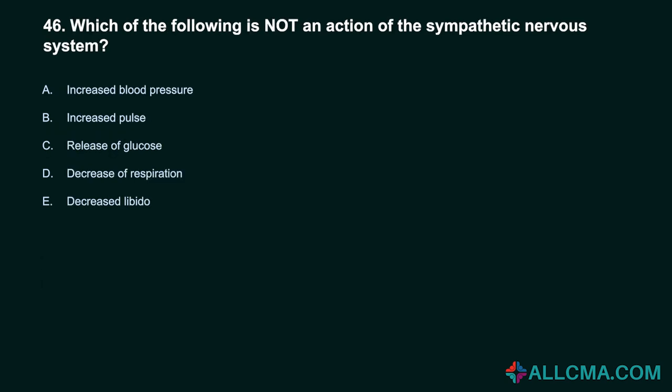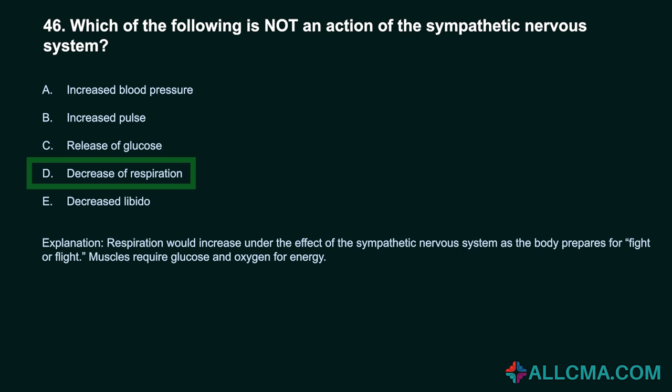Question 46: Which of the following is not an action of the sympathetic nervous system? A. Increased blood pressure. B. Increased pulse. C. Release of glucose. D. Decrease of respiration. E. Decreased libido. Correct answer: D. Decrease of respiration. Respiration would increase under the effect of the sympathetic nervous system as the body prepares for fight or flight. Muscles require glucose and oxygen for energy.